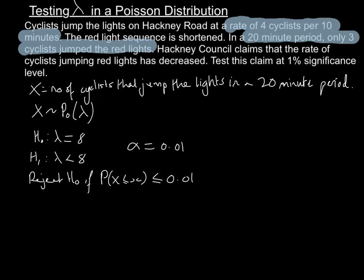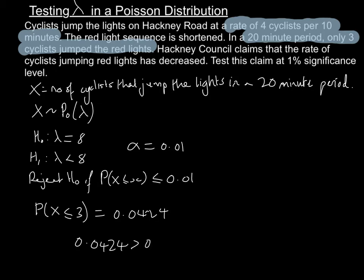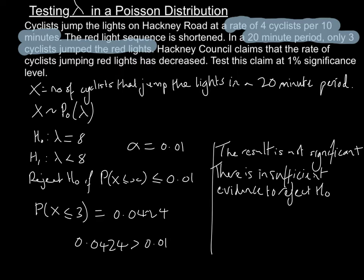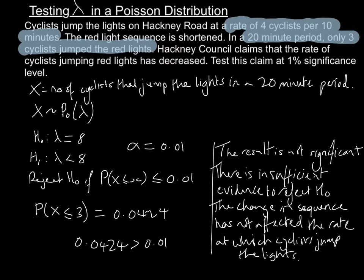Now we need to carry out our test. Only 3 cyclists jumped the lights in a 20-minute period, so we need to find the probability of 3 or fewer cyclists jumping the lights. Looking that up in the table, it's 0.0424, which is quite low. But our significance level is 0.01, and 0.0424 is greater than 0.01, so we haven't got enough evidence to reject H0. The result is not significant. There is insufficient evidence to reject H0, so the change in the sequence has not affected the rate at which cyclists jump the lights. Always include this context relating back to the question, as would be expected in an exam.